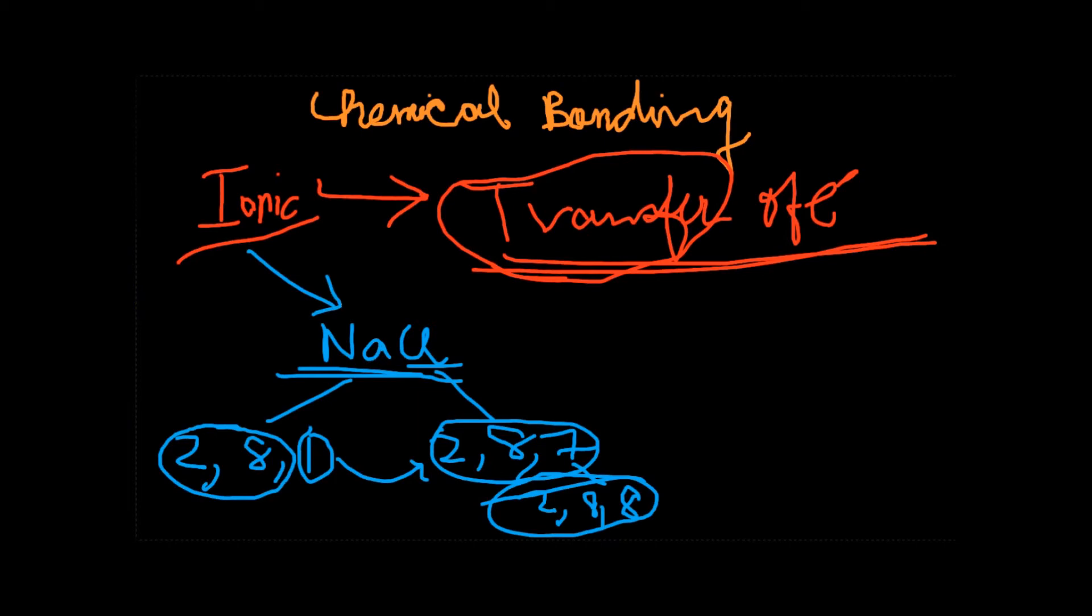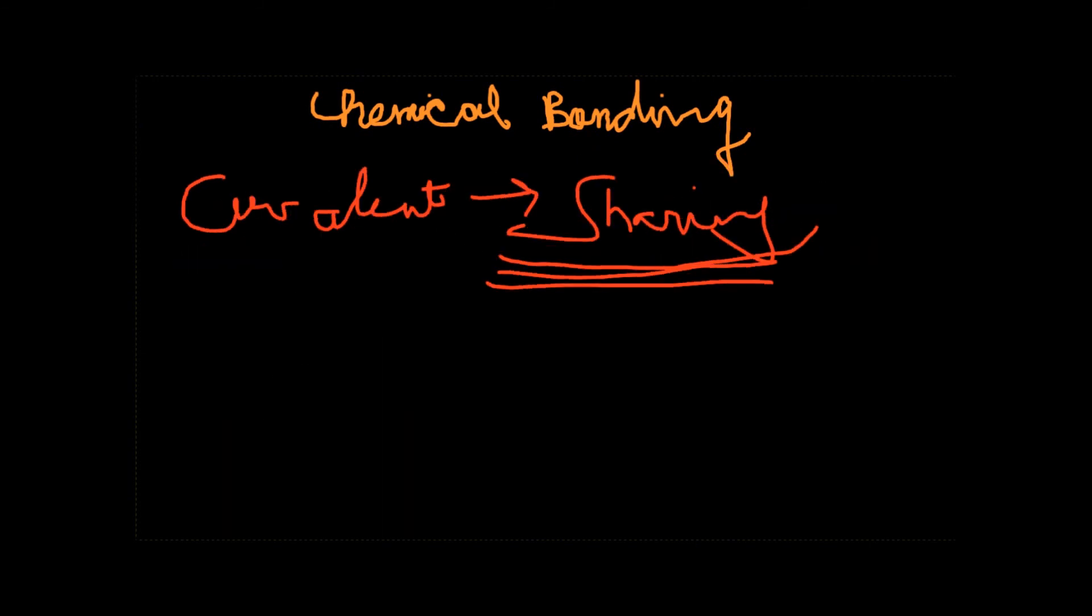In ionic bonds, that's the crux of the situation. However, there are certain properties of electrovalent compounds. They possess high melting and boiling points, conduct electricity in only molten state or aqueous solution, and are obtained by the transference of electrons from one atom to the other. These compounds are generally soluble in water but insoluble in non-polar solvents like benzene and ether, which do not have a high dielectric constant. We'll be covering covalent and coordinate bonds in the next video.